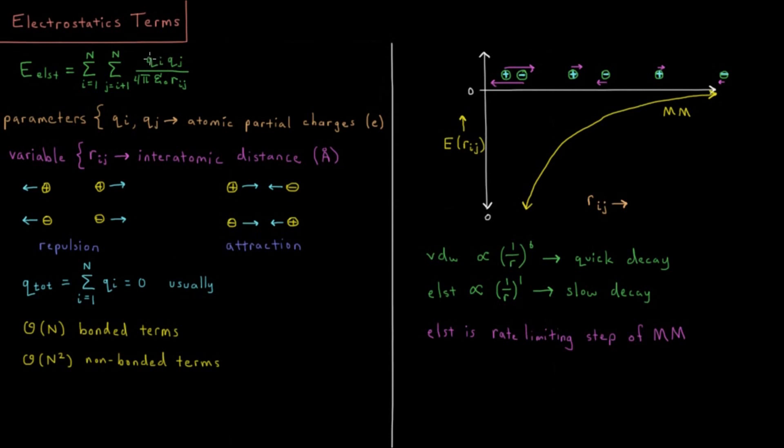The interaction of each pair of atoms is charge of atom 1 times charge of atom 2 divided by 4 pi epsilon 0 times the distance between the atoms. We have parameters of QI, QJ.